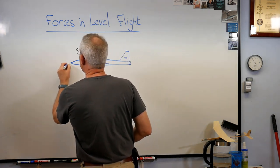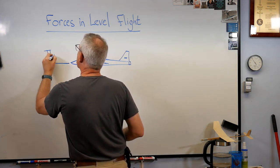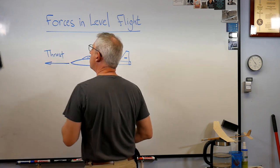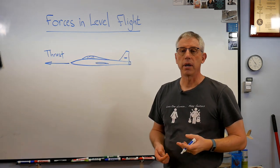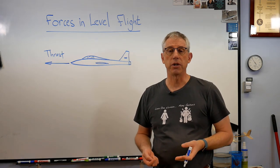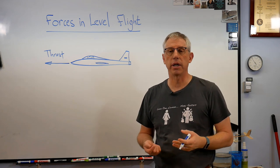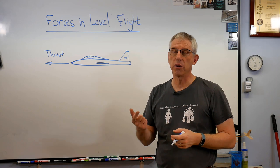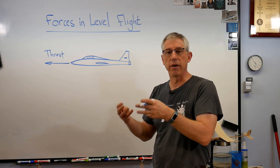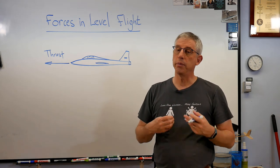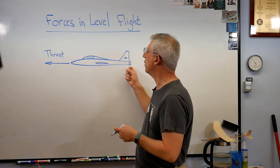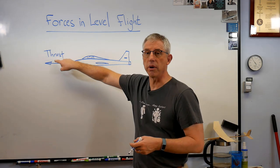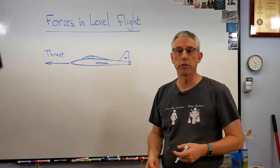So first thing you need is thrust. Now thrust comes from a propeller or from a jet engine. Some propellers are powered by the jet engine, so just to be clear here, there's jet engines, there's turbofans, there's turboprops, those all have gas turbines in them, and there's piston engines that also drive a propeller. So there's a propeller or a jet exhaust making thrust. That's the force that makes you want to go forward.